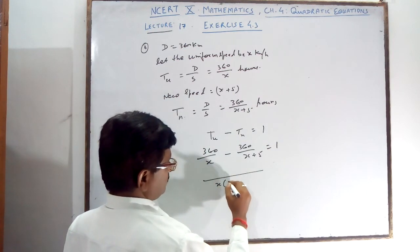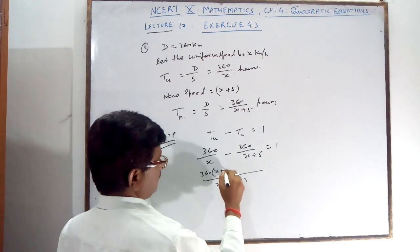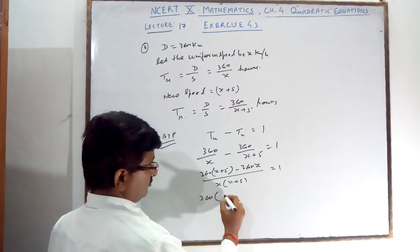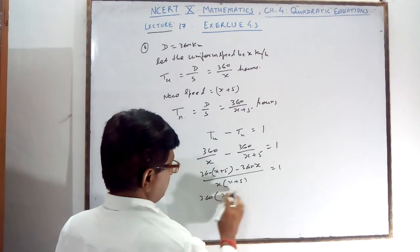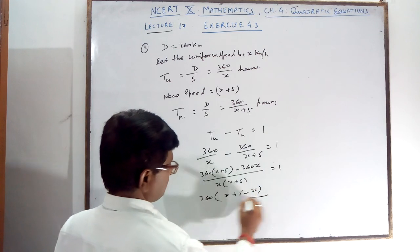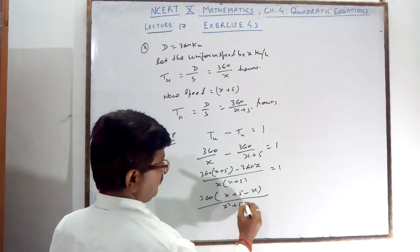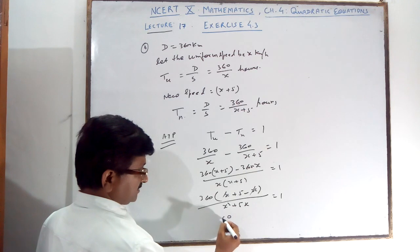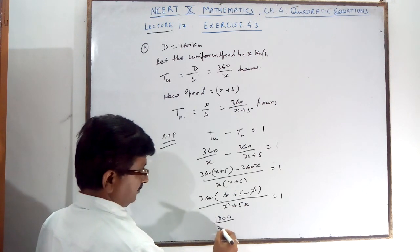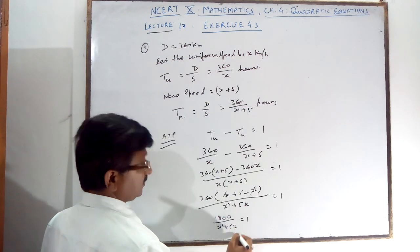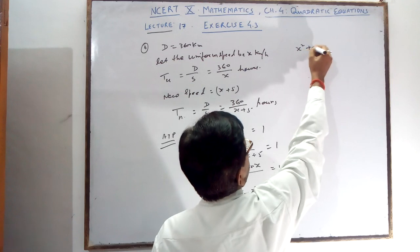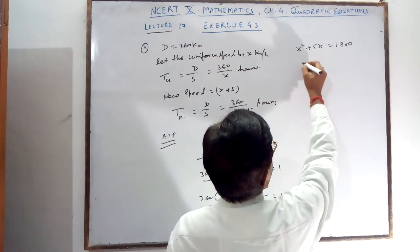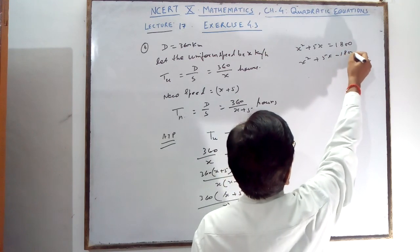Take the LCM x into x plus 5. You will get 360 into x plus 5 minus 360 into x. Taking 360 outside: 360 into (x plus 5 minus x) upon x squared plus 5x is equal to 1. X and x cancel, giving 360 into 5 equals 1800. So 1800 upon x squared plus 5x is equal to 1. Cross multiply: x squared plus 5x is equal to 1800.